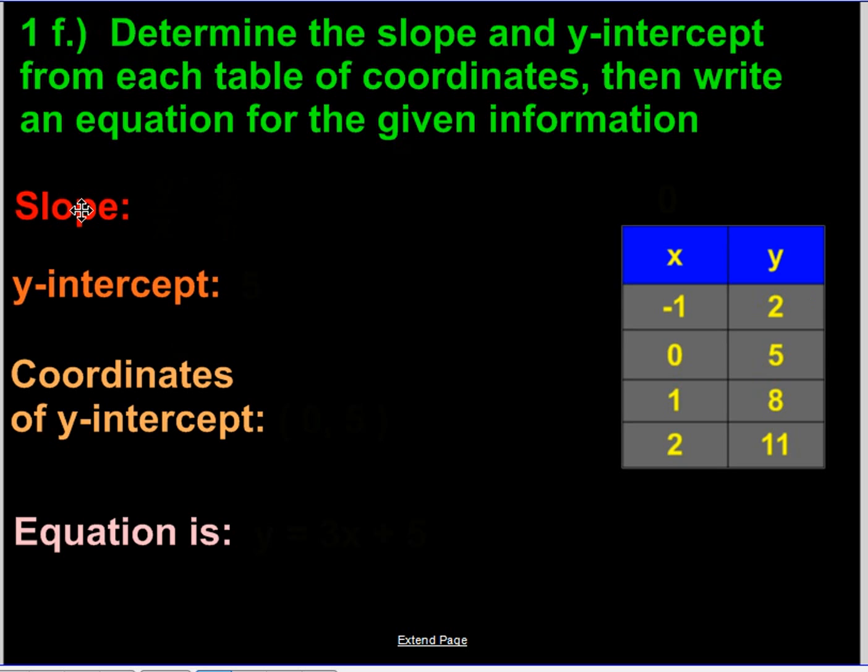So our slope, remember it's going to be y over x. The change in value of y was 3, the change in value of x was 1. So we get 3 over 1.